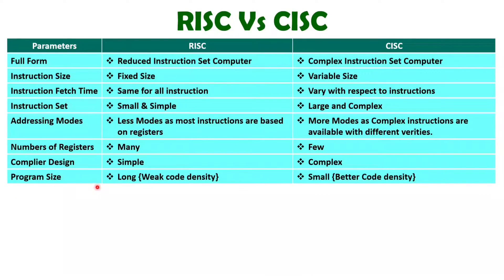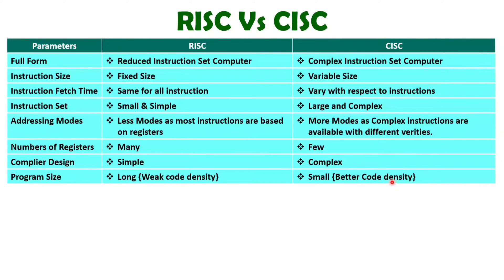When you talk about program size, then obviously with RISC architecture, the program will be lengthy. The reason is you have small and simple instructions, so to perform any complex task, you will have to write many instructions. You will be having larger program size and it will be having weak code density. But with CISC architecture, your program will be small, because in a single instruction you can perform a complex task. So you will be having better code density in terms of program size with CISC architecture.